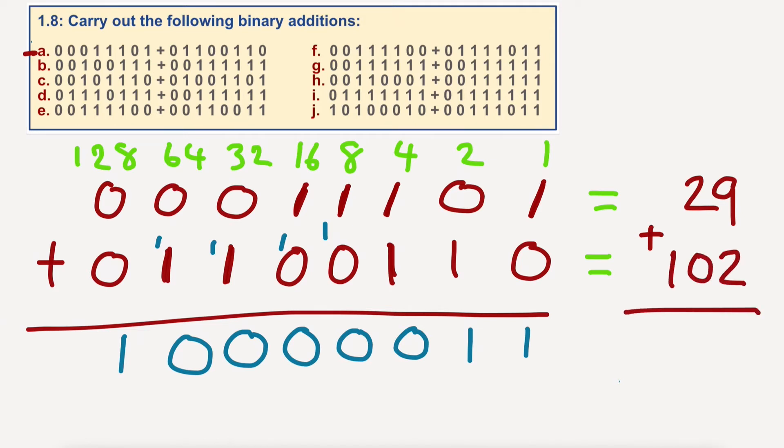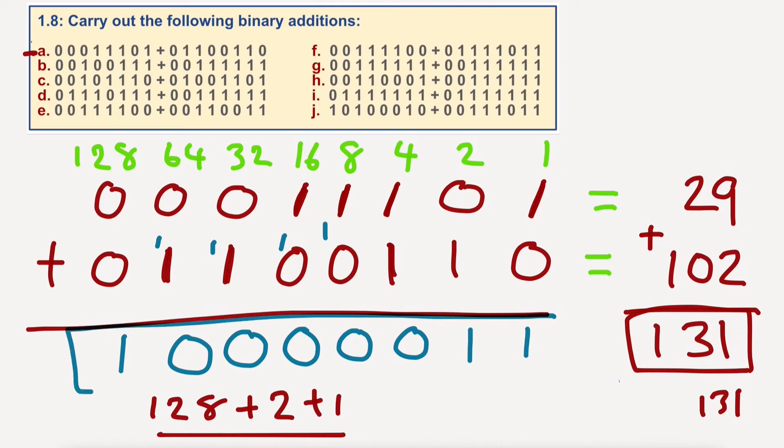Now, that should give us a grand total of one hundred and thirty-one. Just make a little note of that down here, 131. Well, let's check this answer here. So, one-hundred-and-twenty-eight, plus two, plus one, equals one-hundred-and-thirty-one. So, we are correct. So the answer would be, in decimal, in denary, one-hundred-and-thirty-one, but we want it in binary, so the answer would be that. So, that's A done. Let me rub all this out, and we'll have a little go at F.